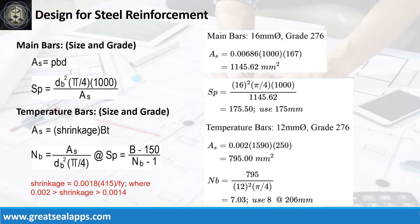Given rho equals 0.00686, B equals 1000mm, and D equals 167mm. The area of steel for main bars is 1145.62 square millimeters, and the spacing for 16mm bar is 175mm. The area of steel for temperature bars is 795 square millimeters, and the number of bars for 12mm bar is 8.